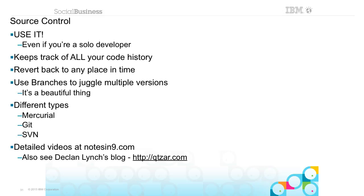There are different types of source control. I like Mercurial because that's what Declan Lynch taught me and that's what we use at the day job. A lot of people like Git. I use Bitbucket for my personal projects at bitbucket.org because it's free — they even added XPages to their drop-down list of languages in 20 minutes when I asked, so now I'm pretty loyal to them. You can keep source control all locally, but it's nice having it on the web. Watch Declan Lynch's blog at QTZAR.com — he basically invented teaching the Domino community how to use source control.